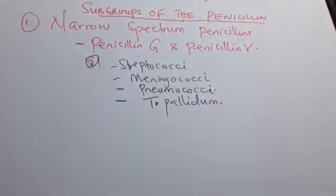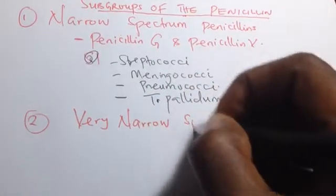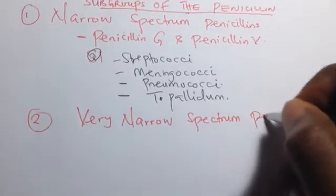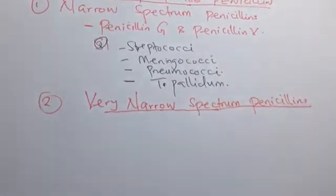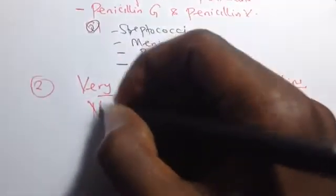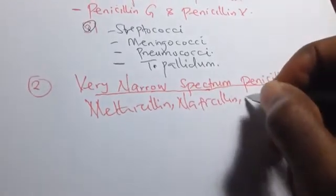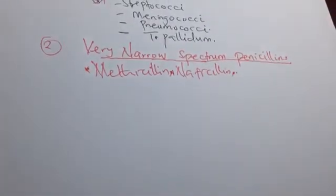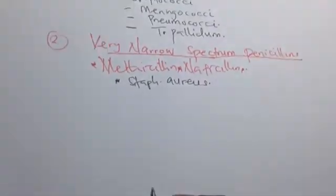These narrow spectrum penicillins act against those organisms. Number two, we have the very narrow spectrum penicillins. Examples are methicillin and nafcillin. These are very narrow because they only work against streptococcus and Staphylococcus aureus.